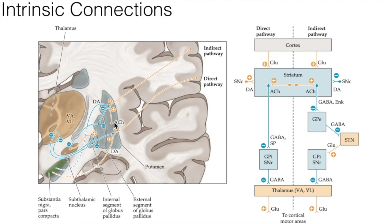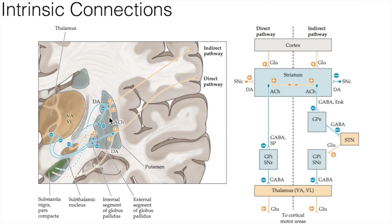The indirect pathway is a little more complicated. It includes a loop through the globus pallidus external segment and the subthalamic nucleus. There is glutamatergic excitatory input from the cortex to the striatum, which then sends output to the external segment of the globus pallidus, then to the subthalamic nucleus, which sends output to the internal segment of the globus pallidus, and finally to the thalamus. The striatopallidal fibers from the striatum to the globus pallidus external segment use GABA and enkephalin.